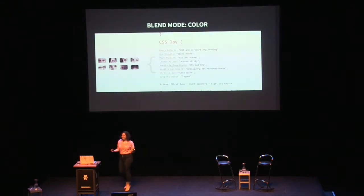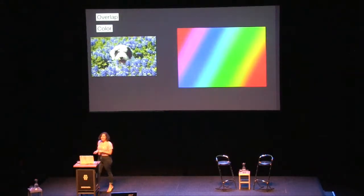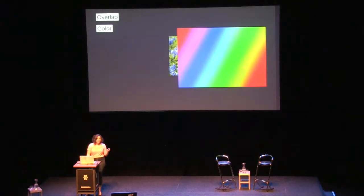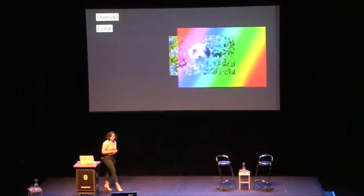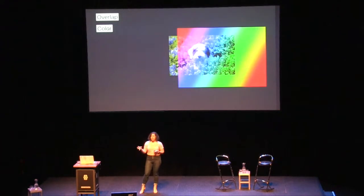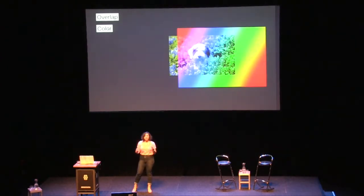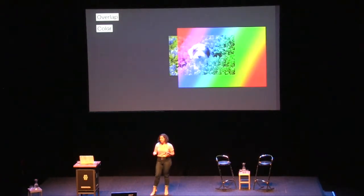Blend mode color is fun — so fun that I brought a dog in. We overlap this dog on a rainbow, then apply a mixed-blend-mode of color to the rainbow layer — the active layer on top. What's happening is that the hue and saturation values from that rainbow are being applied to the luminosity — the brightness values — of that dog. Around the dog's head, white doesn't change; it stays white. The black around its ear stays black. But anything that's mid-tone will change color, taking on the hue and saturation of that rainbow surrounding it.